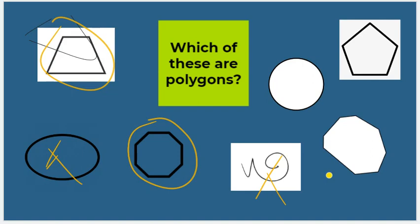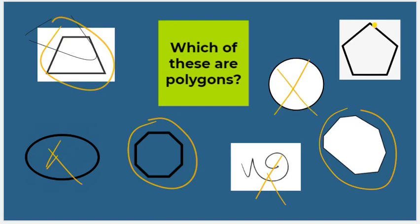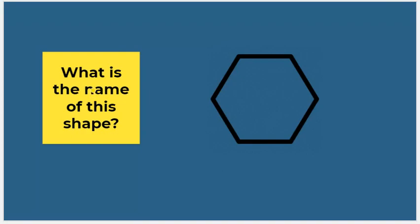Is this next shape a polygon? Yes it is — even though it's kind of an odd shape, it is a closed shape and it does have straight sides, so this one is a polygon. How about this one? No — no straight sides, it's curved. And how about this one? Yes, this is a polygon because it is a closed shape with straight sides.